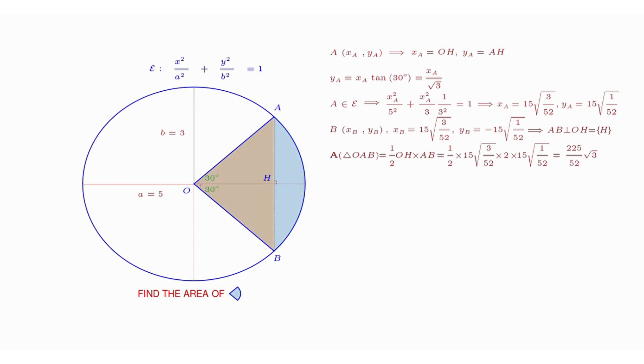Now the area of triangle OAB can be calculated as half of the product between OH and AB, and its value is shown on the right-hand side.